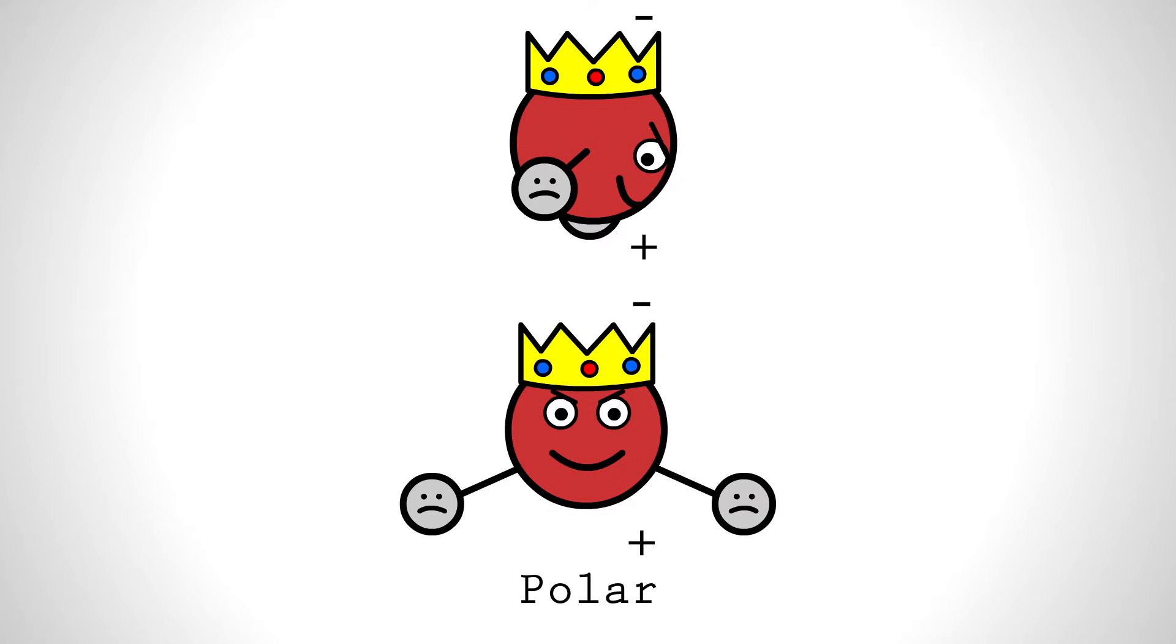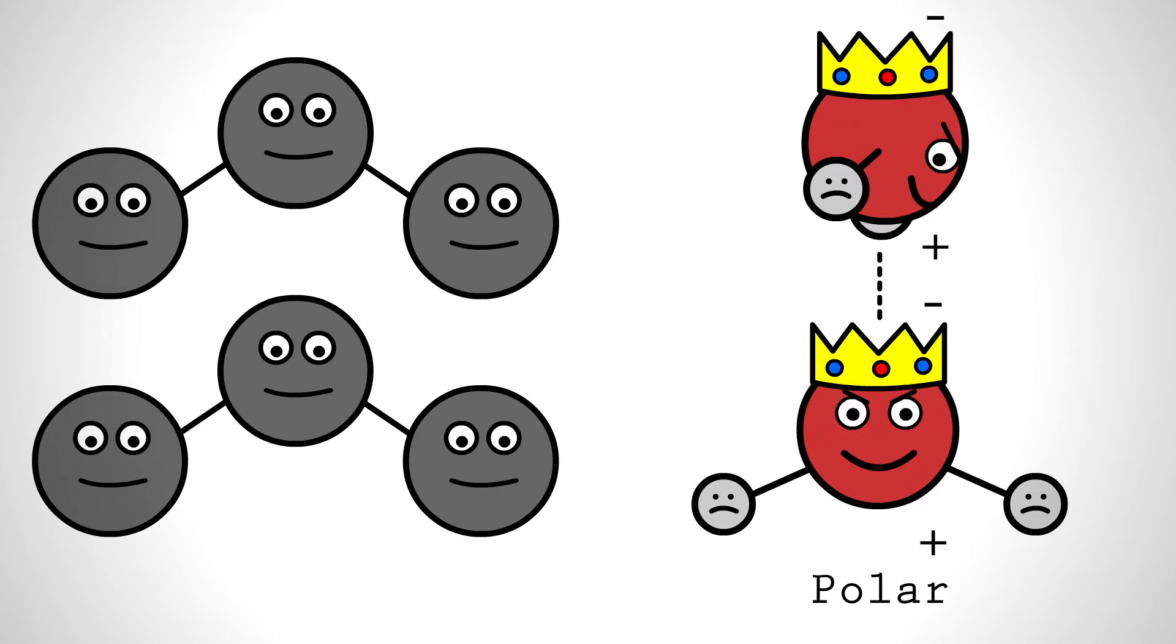Neighboring water molecules can then interact, positive to negative, much like two bar magnets. Molecules like hydrocarbons are considered nonpolar or fattier because they share their electrons relatively equally, meaning their interactions with their neighbors are far weaker.